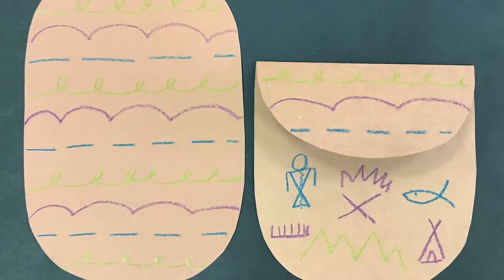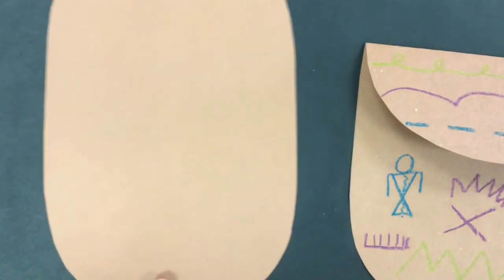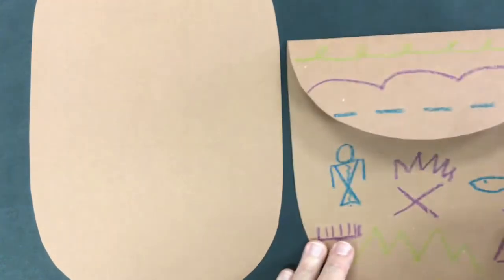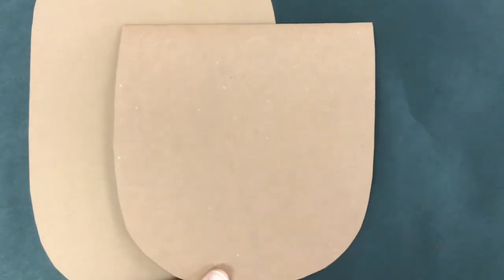So this is what you should have now. And now I'm going to show you how we're going to attach them together. So you're going to flip over the very big one, and then you're going to flip over the one that has a flap.